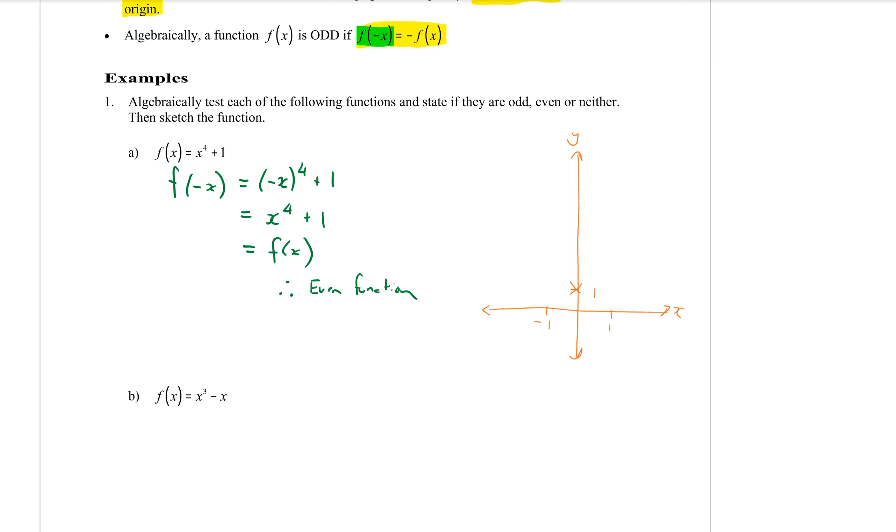So if I sub in 1 into the original equation, 1 to the power of 4 is 1 plus 1 makes 2. So 1, 2 there would be my next point. Also because it's going to be symmetrical we know at negative 1 it's also going to be at 2 and there is my curve. Looking just like a parabola it just would get a lot steeper a lot faster.